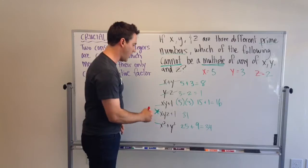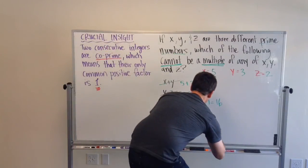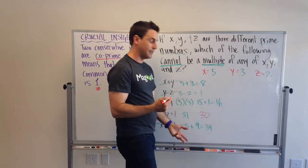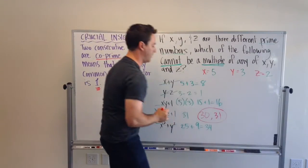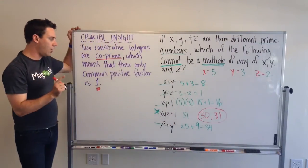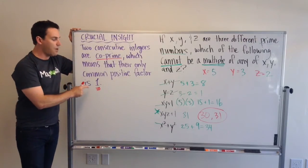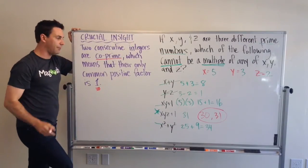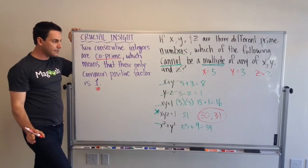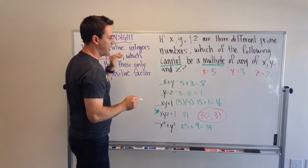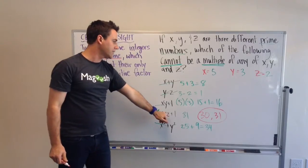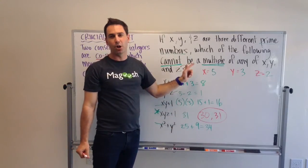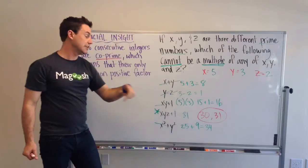So, in this case, x, y, and z would have been 30, and then the next consecutive number would have been 31. Looking at these two numbers, you would know, because of co-prime, that 1 is the only common factor. Thus, that means that x, y, z, or excuse me, x, y, z plus 1, 31, cannot be a multiple of x, y, or z.